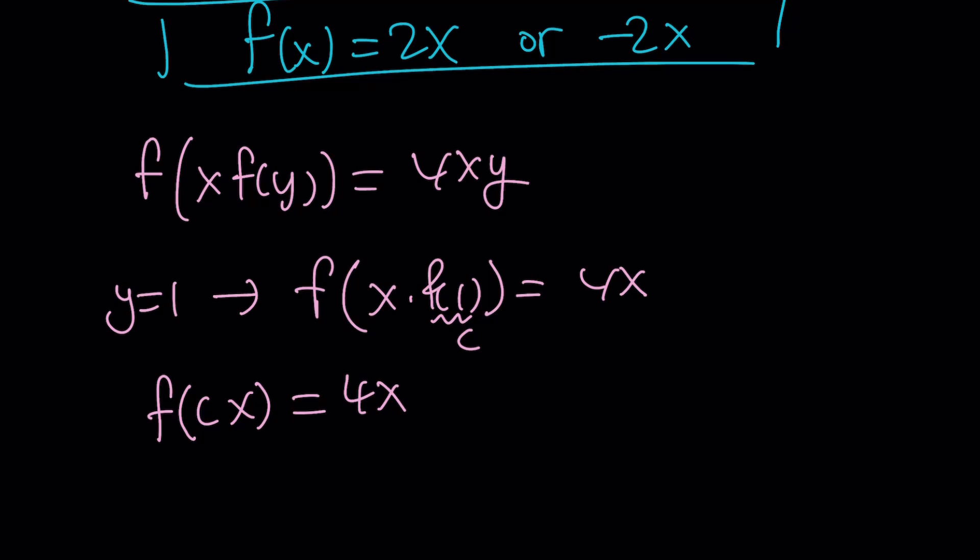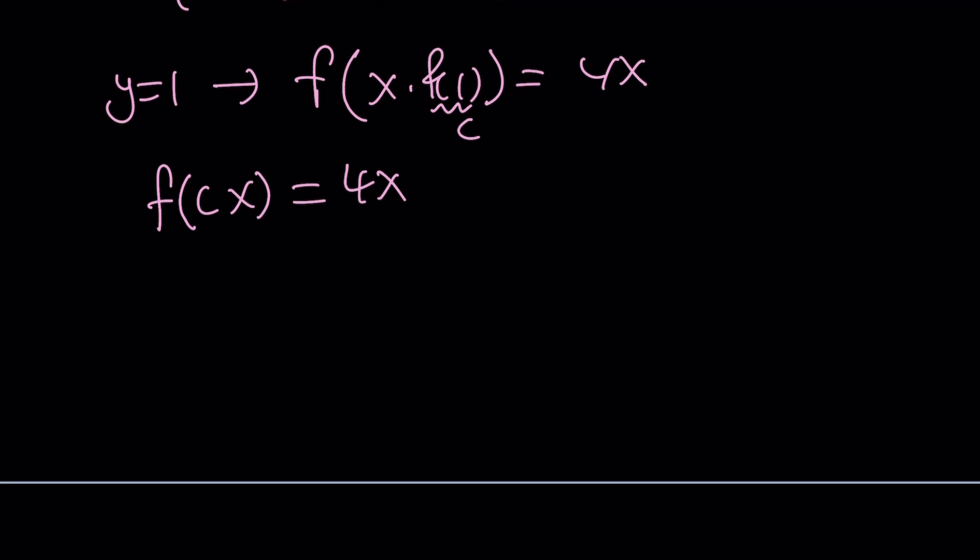Now we set f(1) equal to c and now we can go ahead and replace x with x over c provided that c does not equal 0. If at the end c turns out to be 0 then our assumption was wrong and we can always fix it. So let's replace x with x over c. That gives us f(c times x over c) equals 4 times x over c. And then the c cancels out and we end up with f(x) equals 4x divided by c. This is cool.